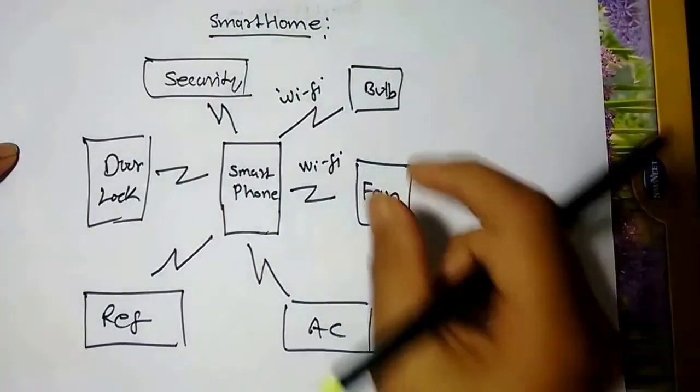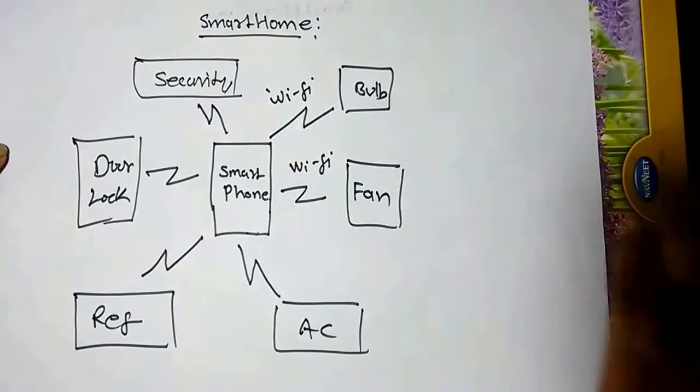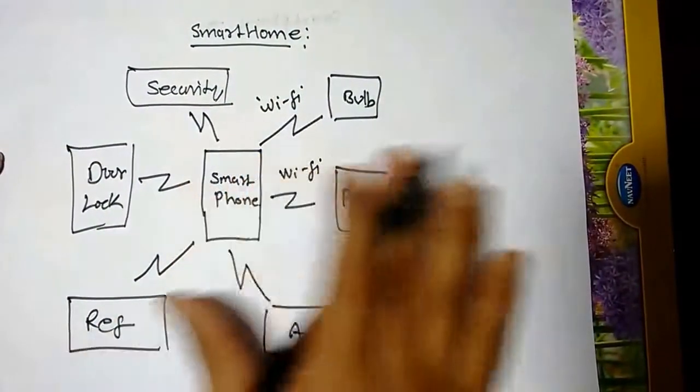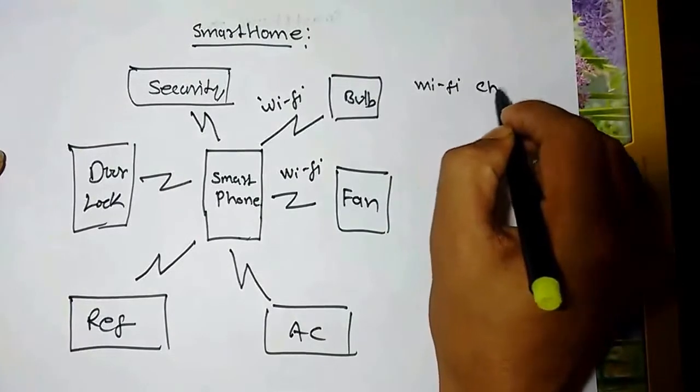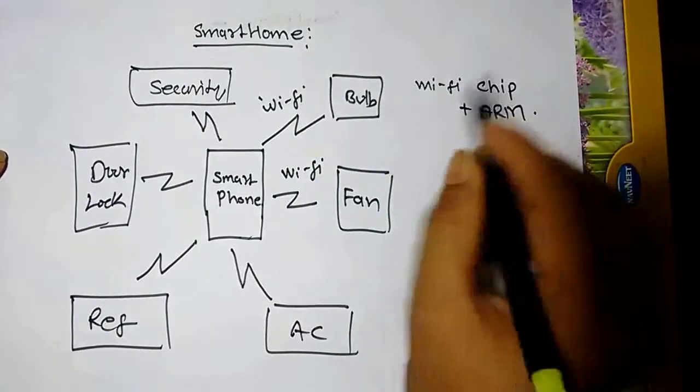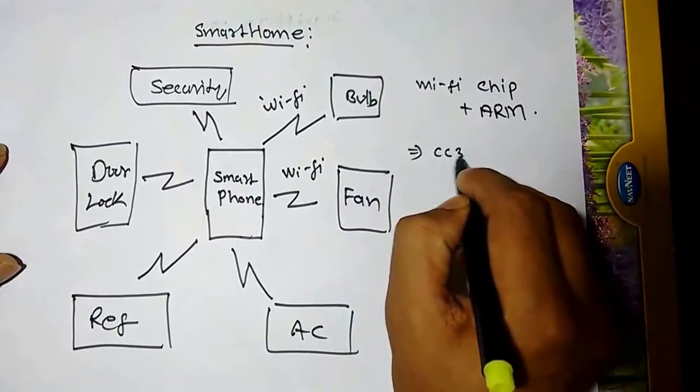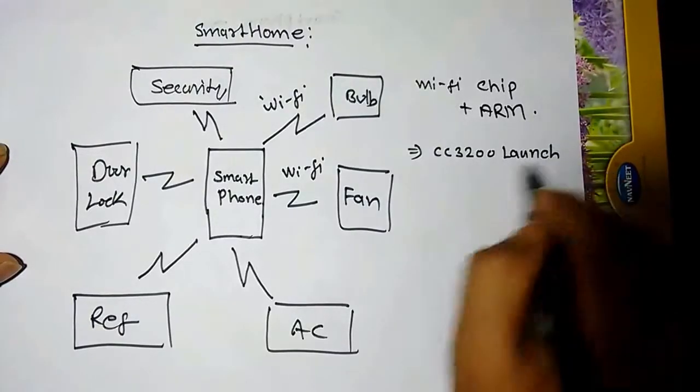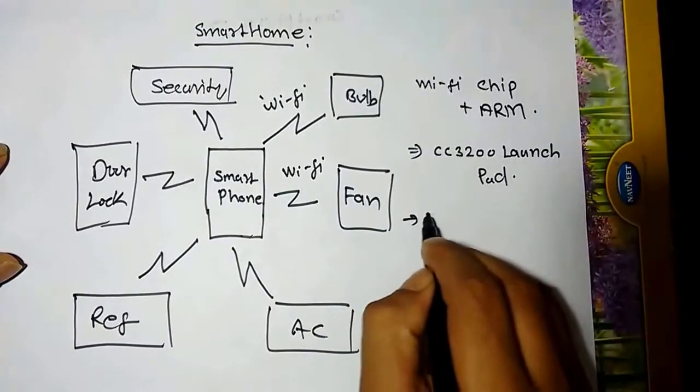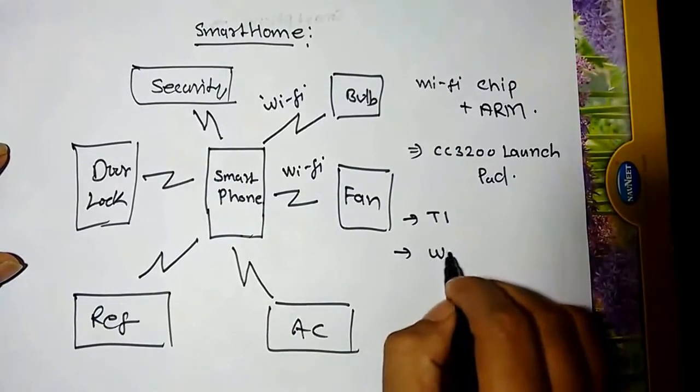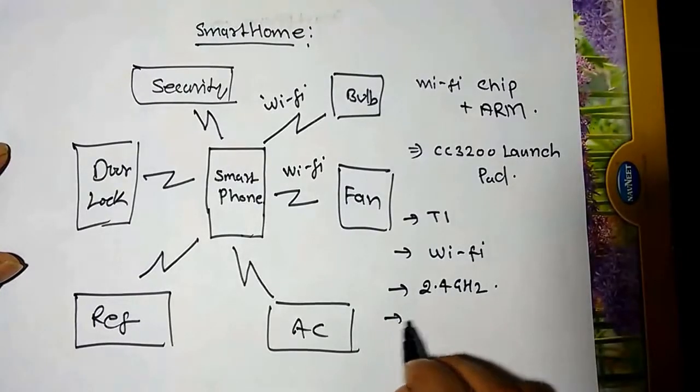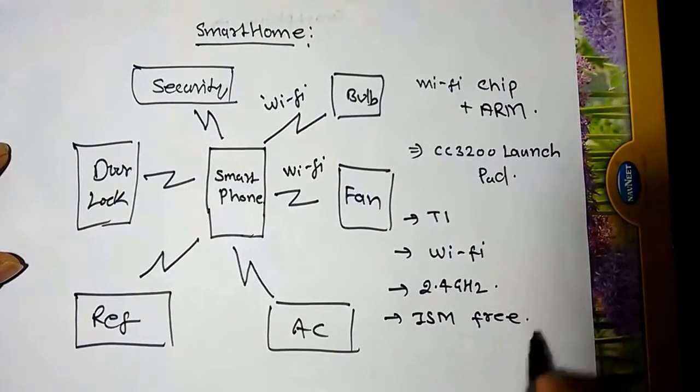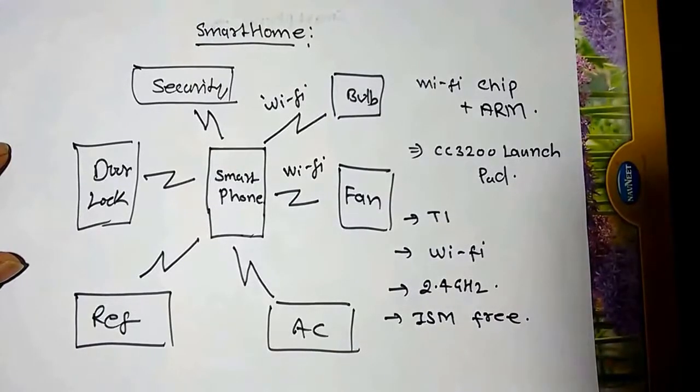There should be a device which will receive the Wi-Fi and which will control this bulb, fan, AC and all the security systems. That device is a Wi-Fi enabled chip plus ARM microcontroller. There is a device available in the market known as CC3200 launchpad made by Texas Instruments, running on Wi-Fi. The Wi-Fi runs on 2.4 GHz, this is your ISM band, ISM free band. You need not take the license for using this spectrum worldwide, so it's completely free.